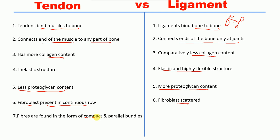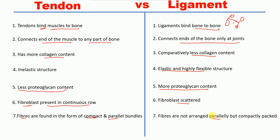In tendons, fibers are found in the form of compact and parallel bundles, whereas in ligaments fibers are not arranged parallelly but are compactly packed.